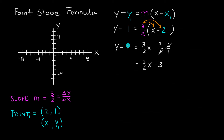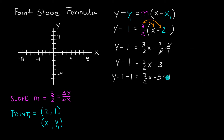We can rewrite the right-hand side as 3 over 2 x minus 3, and the left-hand side is still y minus 1. The next step is to get y by itself on the left-hand side so our line will be in slope-intercept form. To get rid of the 1, we add 1 to both sides. The left-hand side becomes y, and the right-hand side becomes 3 halves x minus 3 plus 1, which gives us 3 halves x minus 2.